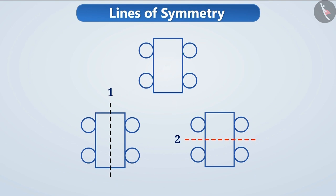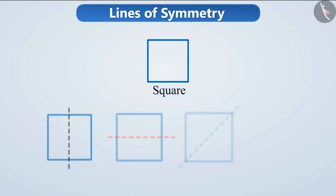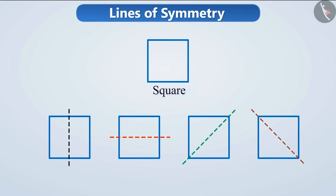Some figures have more than two lines of symmetry also. Like, the symmetry in a square could be seen by folding it by these four lines. Hence, a square has four lines of symmetry. Similarly, let's look at some other figures of geometry and find their number of lines of symmetry.